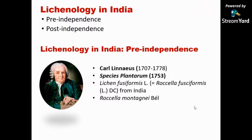Coming to the history of lichen study in India, it can be categorized into two groups: pre-independence and post-independence. During the British period, lichens of India, like any other group of plants and animals, were studied by Europeans. Lichens were also studied by British and Europeans starting from Linnaeus. Linnaeus included only one species from India; Hooker included four species from India. Those who initially collected or studied lichens from India were sometimes botanists or plant collectors, and sometimes doctors — physicians and surgeons like JD Hooker, Strachey, Wallis, and Kurz were all botanists, whereas Dr. Cunningham was a surgeon.